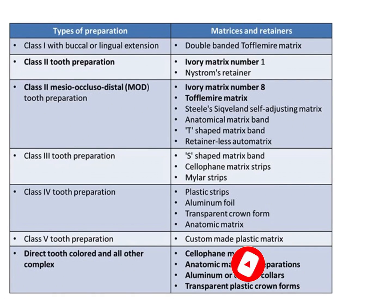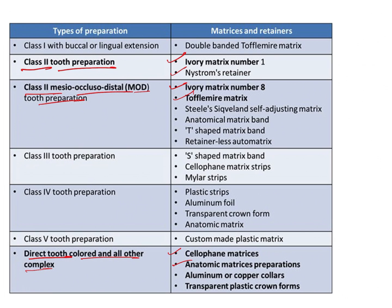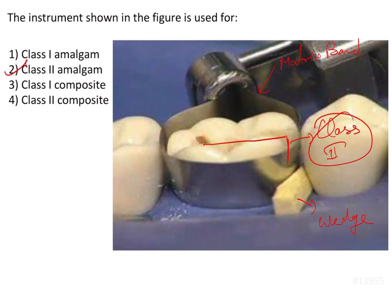There are many different kinds of matrices according to need. For Class 2 tooth preparation, you use the Ivory matrix system 1 and Nystrom's registration. For Class 2 mesiocclusal-distal, the matrices and retainer are Ivory matrix number 8 and the Toffelmire matrix as the ideal one. For direct tooth-colored restorations, you use Siqveland matrices, anatomic matrices, aluminum or copper collars, and transparent plastic crown forms. The answer here is Class 2 amalgam restoration using the Toffelmire matrix system.